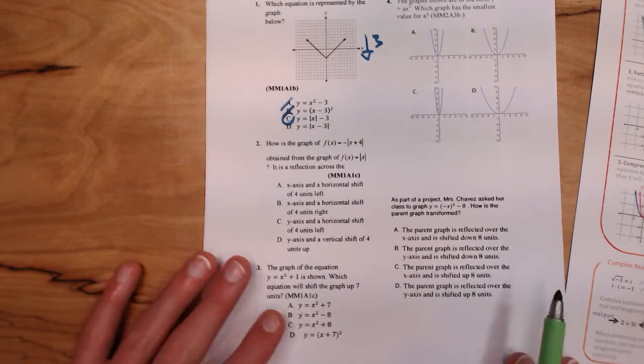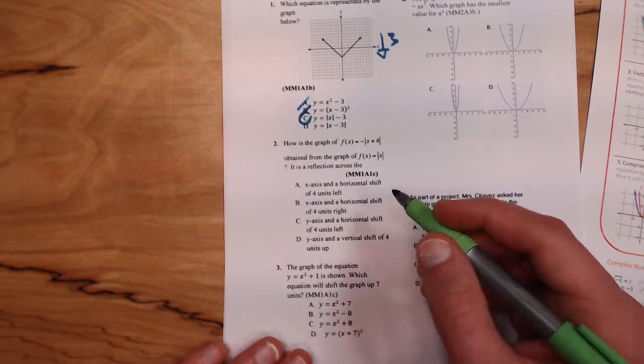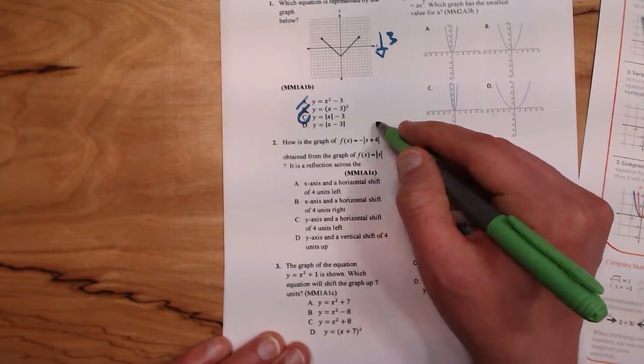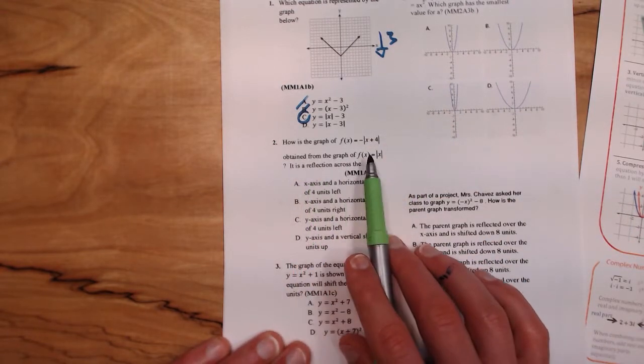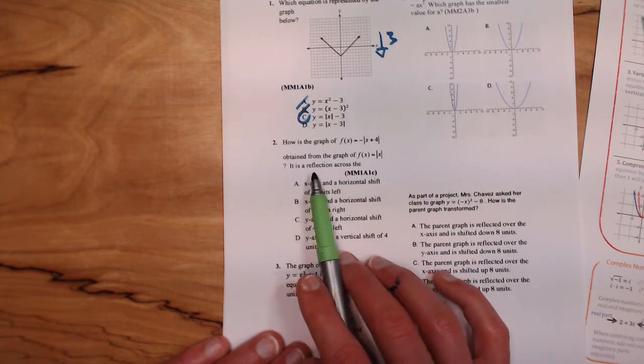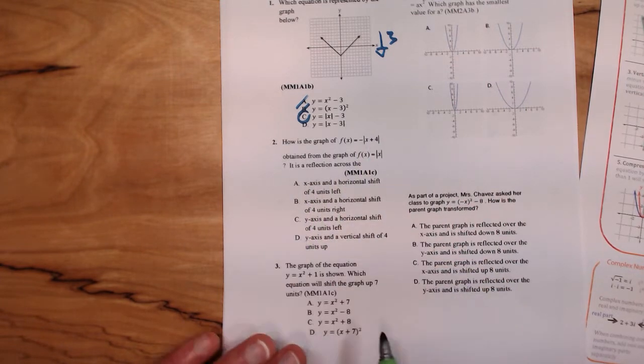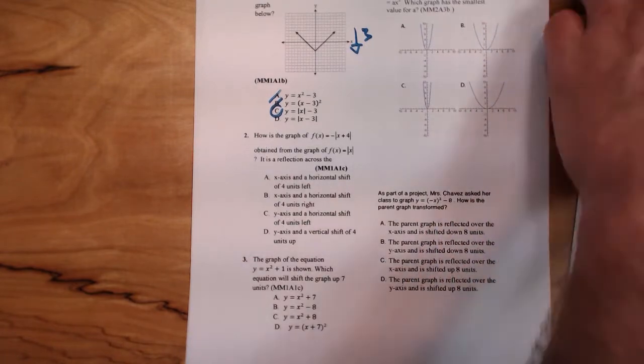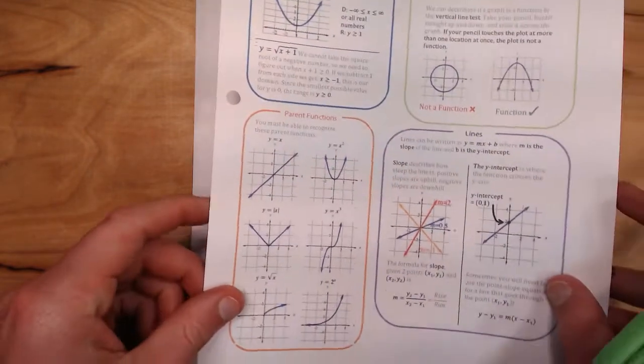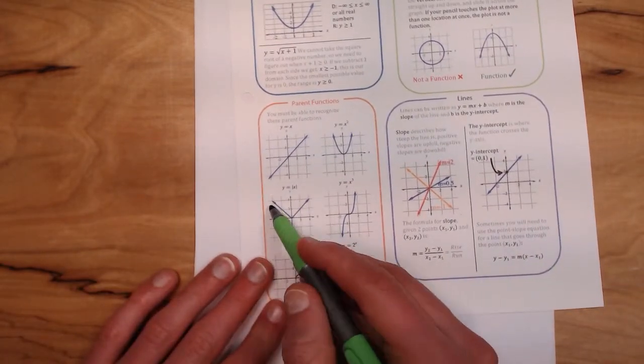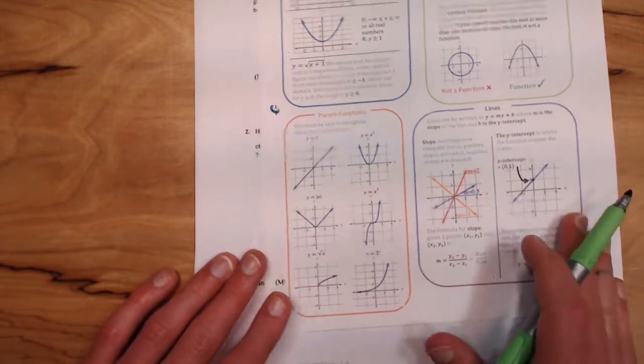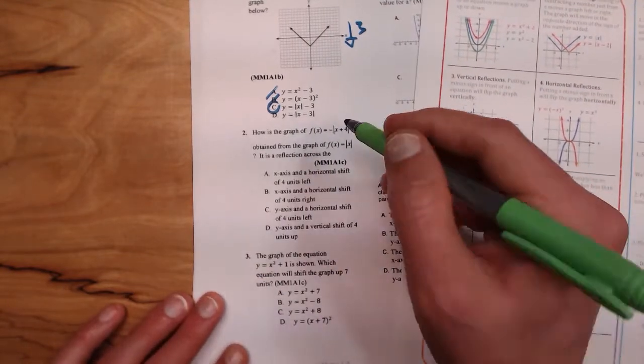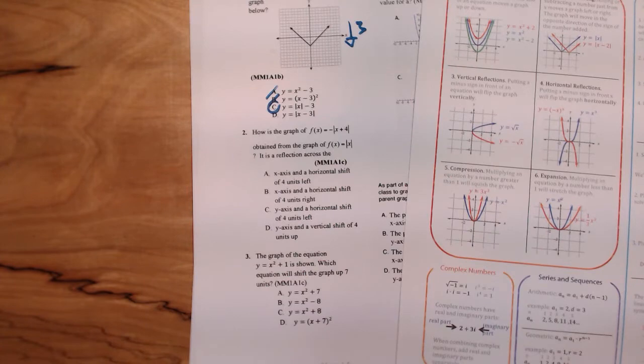Number two says how is the graph of f(x) = -|x + 4| obtained from the graph of |x|? It is a reflection across the blank. First of all, let's remind ourselves what the function looks like. This is an absolute value which looks like a V. There are two things we have to be aware of: the minus sign that's going to do something special to our function, and the plus 4 that will also have a unique effect.